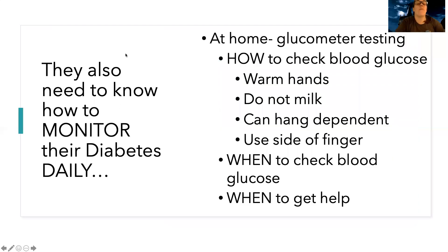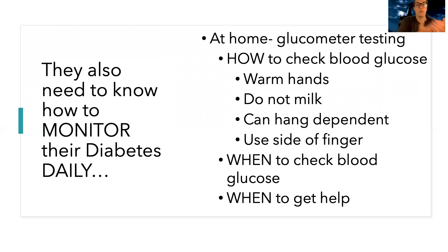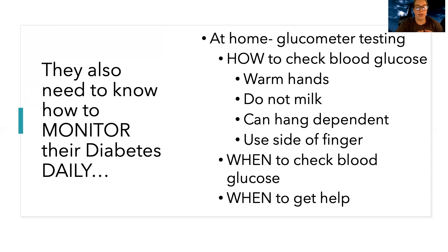Patients also need to know how to monitor their diabetes on a daily basis. At home they'll do glucometer testing. They need to know how to check their blood glucose — keep their hands warm, not milk the finger. If they're having trouble getting blood, they can hang their arm dependent, which means hanging down, to help blood flow to that finger. They should use the side of the finger, as the pad has a lot of nerves and can cause damage.